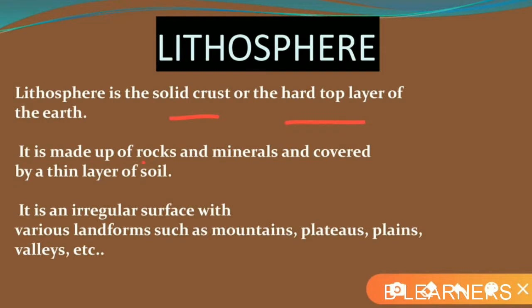Minerals are found in rocks, and when rocks break down into fine particles, soil is also present in the lithosphere. One important thing is that it is an irregular surface — the surface is not the same everywhere. Somewhere it is highly elevated like a mountain. Somewhere the surface rises to a height, becomes flat at the top, then decreases — that table-like shape is what we call a plateau.